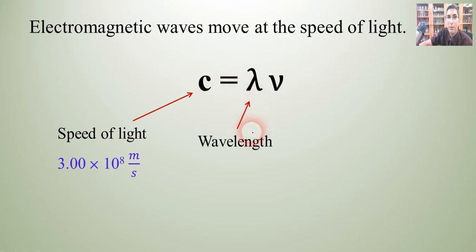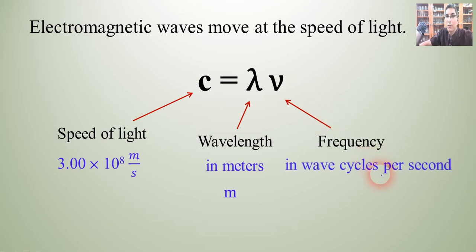Now lambda, as we said, represents the wavelength, and that's going to be measured in meters. And so make sure that you're always in meters whenever you plug that number in. The nu, as we said, represents the frequency. And frequency will be in wave cycles per second. Now there are a few different ways to describe that, some units that we use. We can just use reciprocal seconds for that, or we can also use hertz. Hertz is the same thing as wave cycles per second or reciprocal seconds. Its abbreviation is capital H, lowercase z. So just be aware that reciprocal seconds and hertz are the same thing. We use those interchangeably in chemistry.